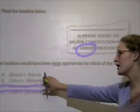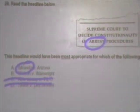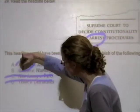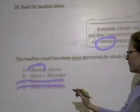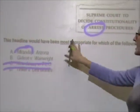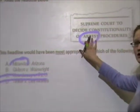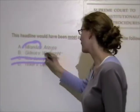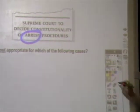We're talking about arrest. Miranda v. Arizona — Miranda wasn't read his rights. And Gideon — he had to represent himself. So even though Gideon has to do with due process, he doesn't really have to do with arrest procedures. So Gideon is not going to be involved, and Miranda v. Arizona is the right answer.